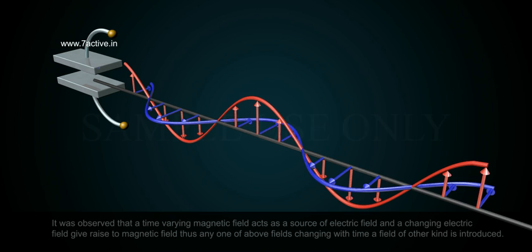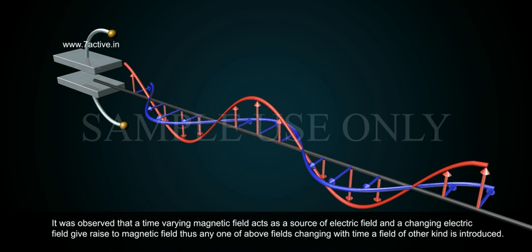Electromagnetic waves. It was observed that a time-varying magnetic field acts as a source of electric field and a changing electric field gives rise to magnetic field.